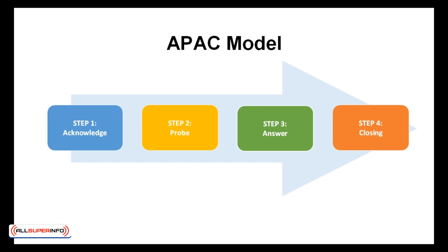Step 1: Acknowledgement. You may initially think that this objection isn't anything worth writing home about, but the worst thing to do is to just dismiss it. Start off by recognizing that it is an issue and open the floor to discuss it. Step 2: Probing. Before jumping in, you need to spend some time making sure that you've got the full picture — is there a particular reason that your prospect has raised this issue?